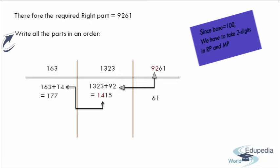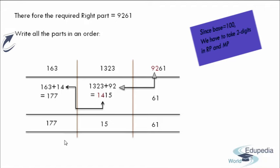By adding 163 plus 14, we get 177 as the new sum. One more thing to remember is that in the left part, we can have as many digits as we want. After completing this process of additions and carry-ons, I am writing the answers in each and every part: 61, 15, and 177. By combining all these parts, we get the final answer. Therefore, 121 cube is equal to 1,771,561.